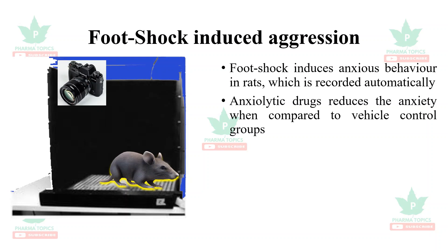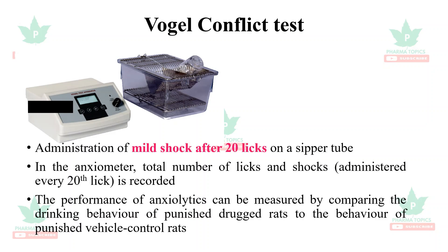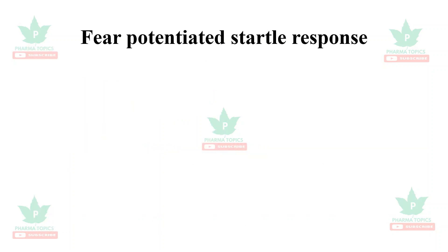The Vogel conflict test is a very famous test. A mild shock is administered after every 20th lick on a sipper tube in the anxiometer; the total number of licks and shocks is recorded. The performance of anxiolytics can be measured by comparing the drinking behavior of punished drugged rats to the behavior of punished vehicle-controlled rats.